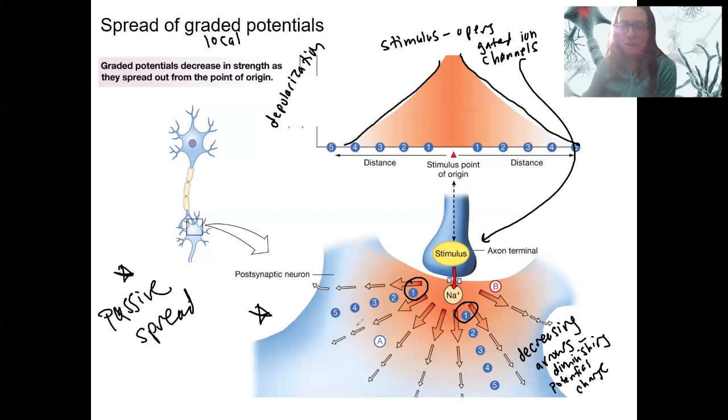This effect is passive. Nothing is actively transporting it. It's the movement of ions inside of the cell. So the stronger the stimulus, the stronger the change, the greater the change in membrane potential, and the greater the area is that it travels. So stimulus size matters. What this means is graded potentials can be different sizes. They're graded.